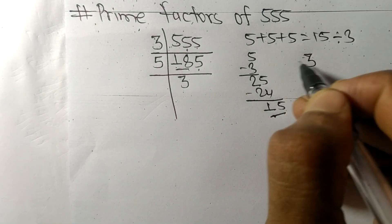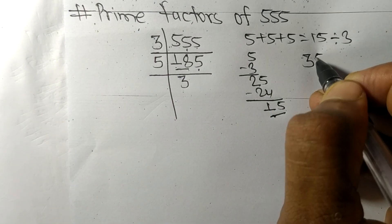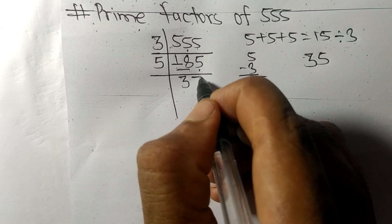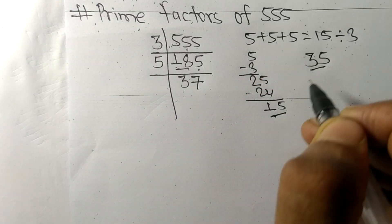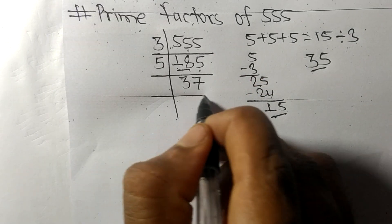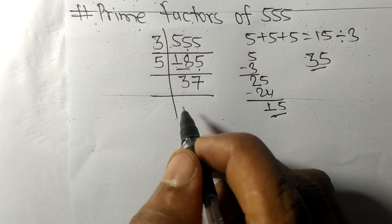This 5 makes 35, 5 times 7 is 35. So now we got 37, which is a prime number.